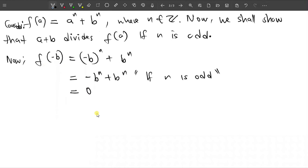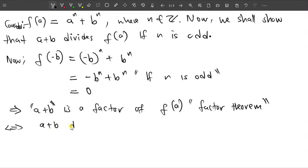So we know that when this happens for polynomials, we know what follows from that. So this implies that a + b is a factor of f(a). So this follows from the factor theorem. If you are not familiar with the factor theorem, it's good that you just find any mathematics textbook and just read on it. So we know from the factor theorem that if this happens, then this is a factor. So if this is a factor, it simply means that a + b divides f(a) if n is odd.